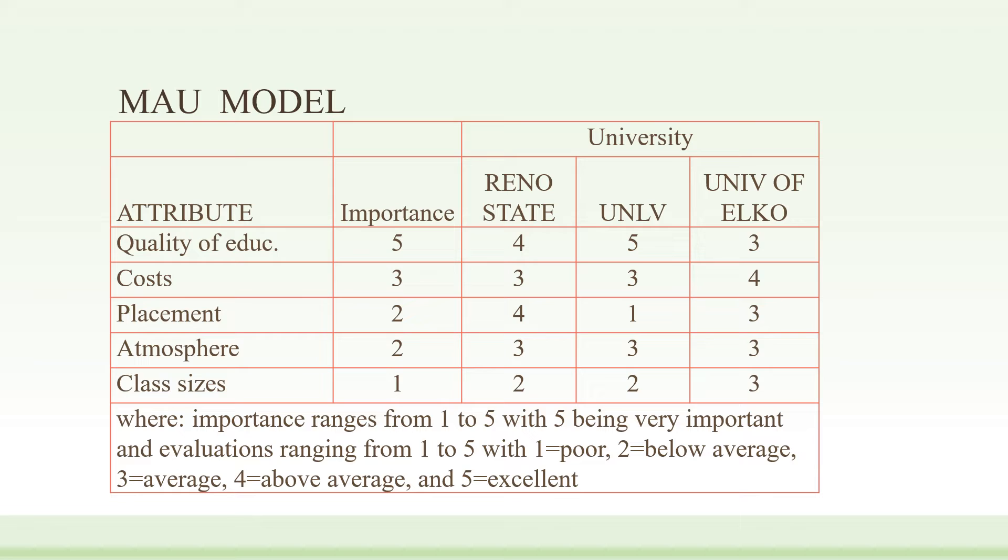In terms of costs, Reno State and UNLV were the same, but the University of Elko was cheaper and got a better score. In terms of placement, Reno got the highest score, followed by Elko. UNLV got a very distant low score of one, the worst it could have gotten. Atmosphere: three, three, three. Class sizes: two, two, and three.